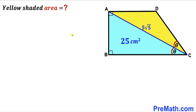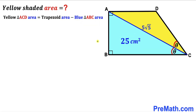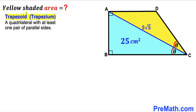Let's get started. Since we want to find the area of the yellow shaded triangle, we observe that the yellow triangle's area equals the whole trapezoid area minus the area of the blue triangle ABC. We know the blue triangle area is 25, so our task is now to calculate the area of the trapezoid. Recall that a trapezoid (or trapezium) is a quadrilateral with at least one pair of parallel sides.